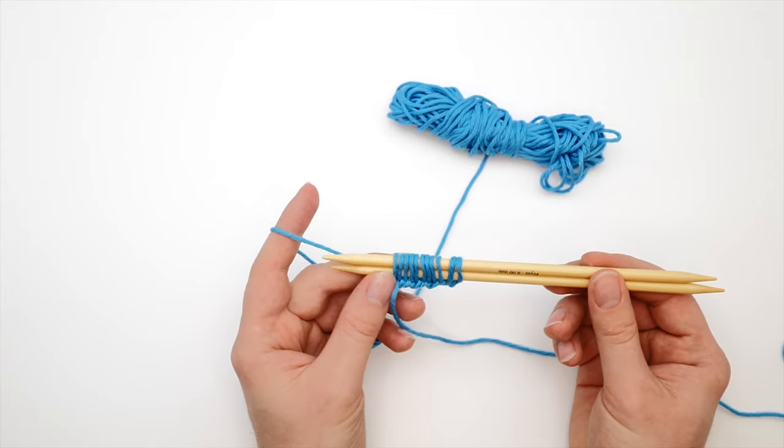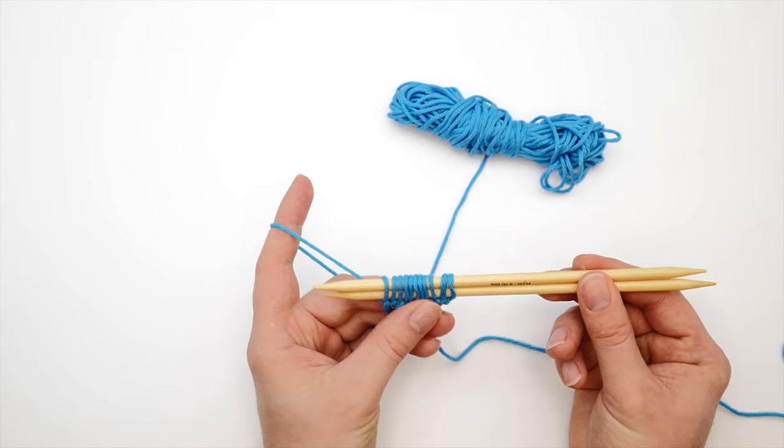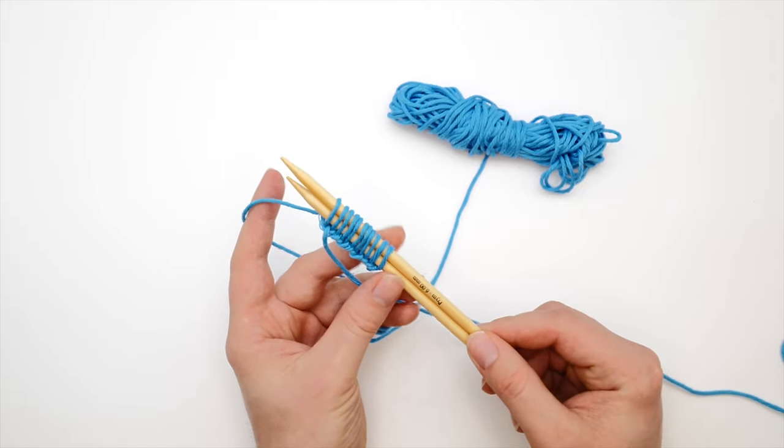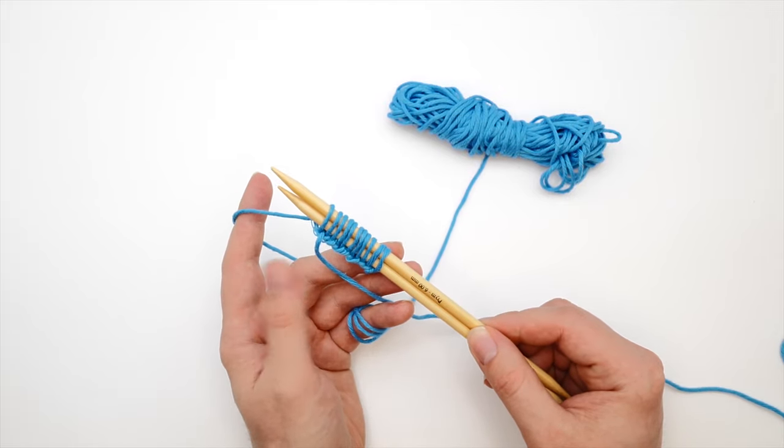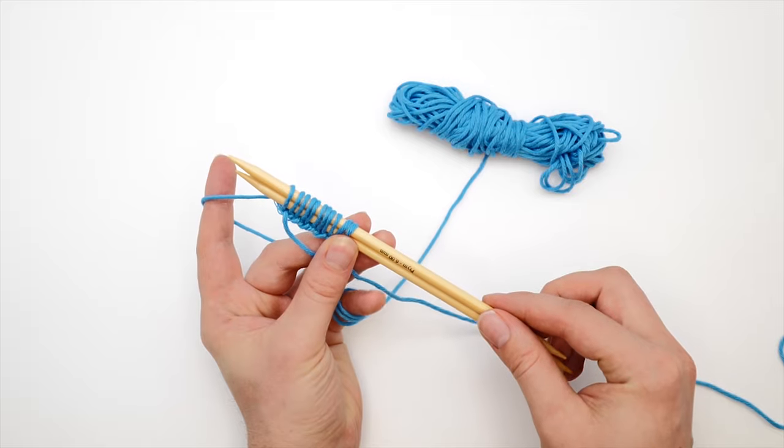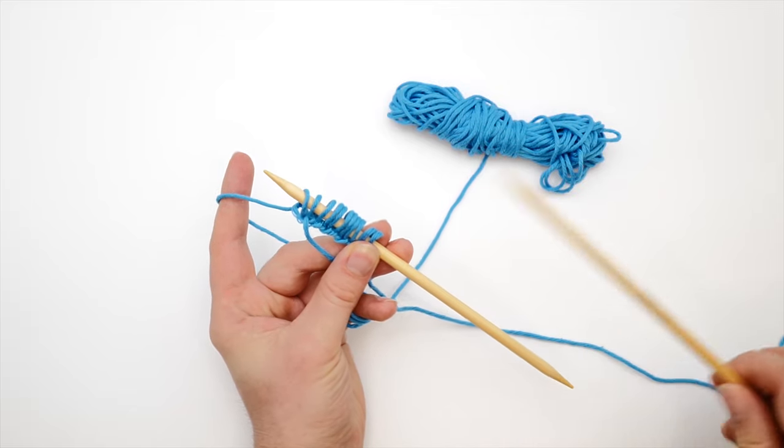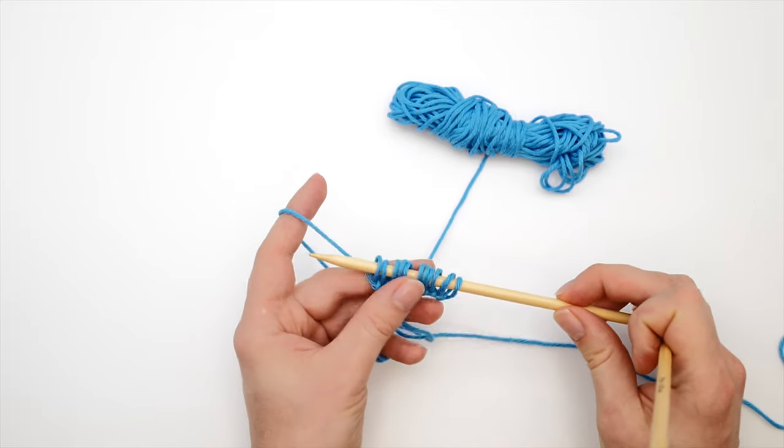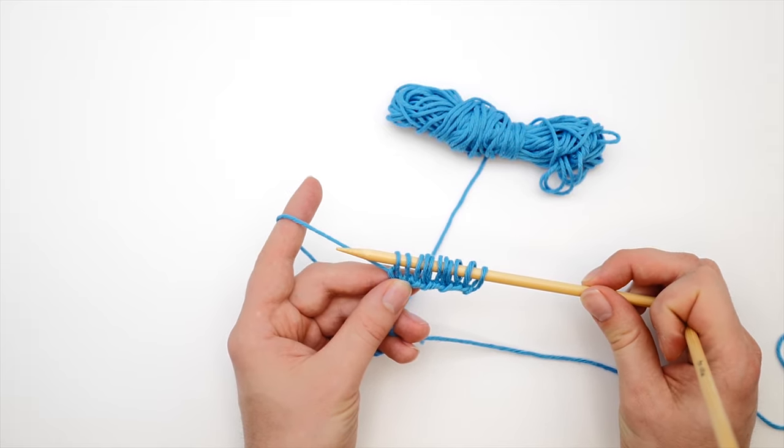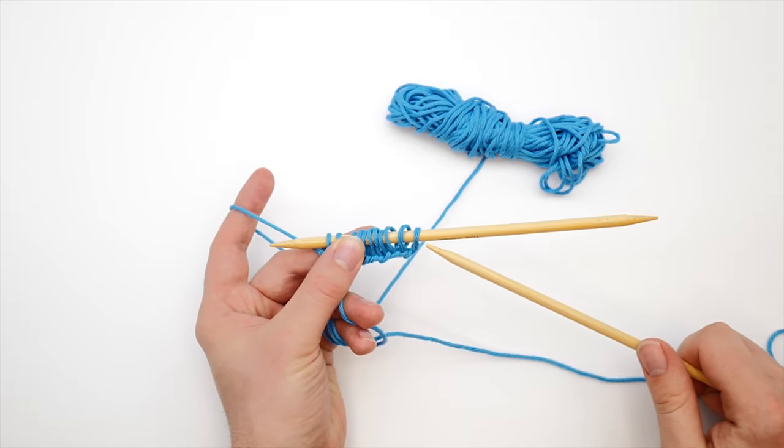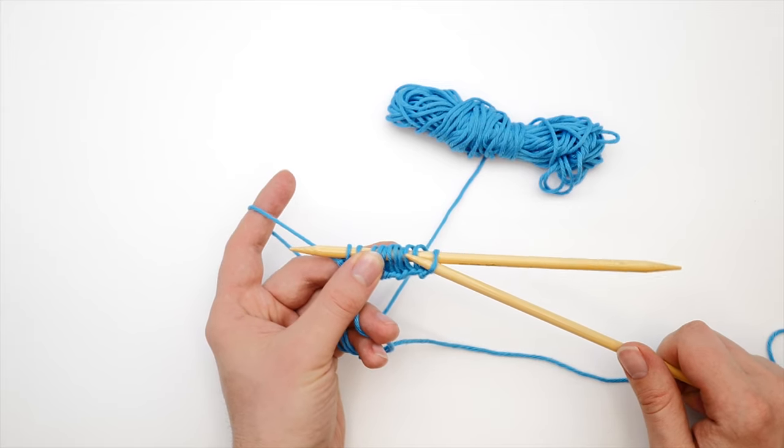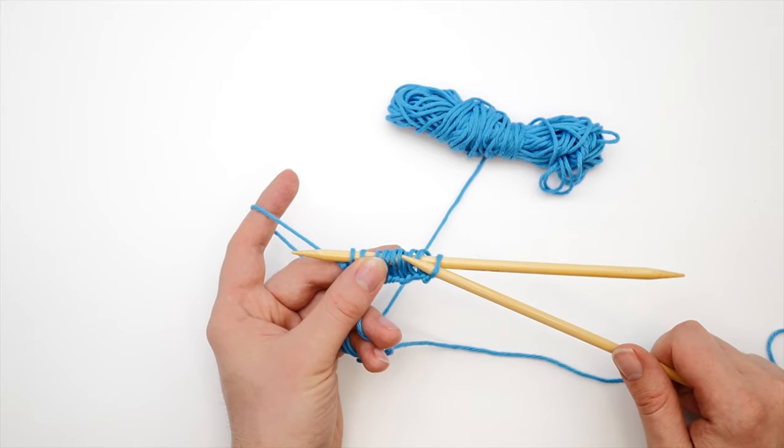So once you have the desired amount of stitches on your needle, you have to secure the yarn and pull out the second needle like this. And there is your cast on edge. As you can see, this created very loose loops and it's easy to insert the needles.